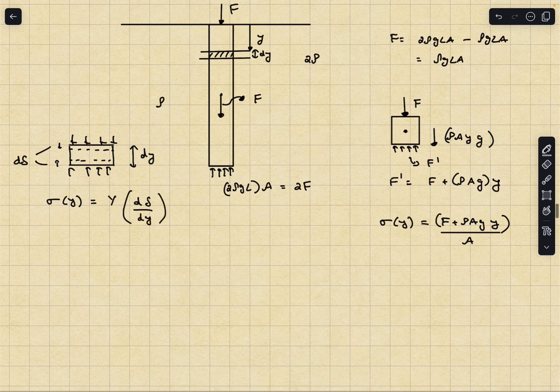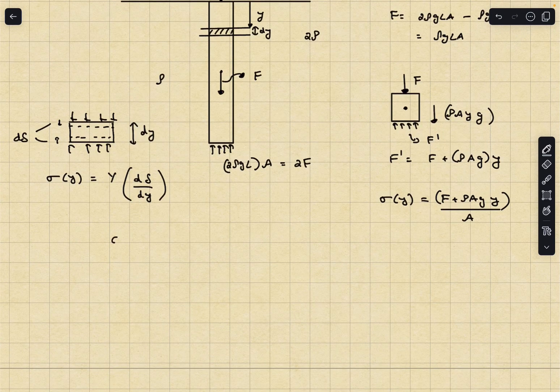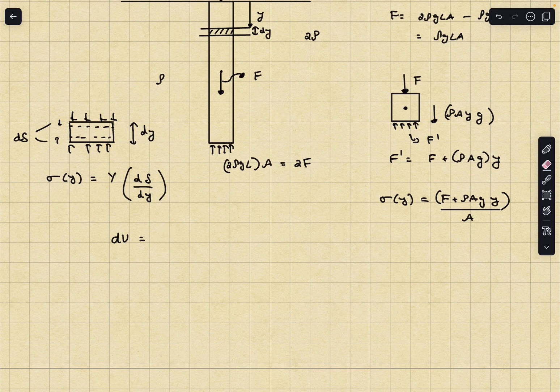The compressive stress sigma y is equal to Y times the strain, and the strain in this element is the change in length d delta divided by the original length dy. You're going to separate the variables and integrate throughout the rod. Now let's write down the potential energy change in our small element. That is going to be half stress squared divided by the Young's modulus. This was per unit volume, so we have to multiply it with the volume of our small element which is Ady.